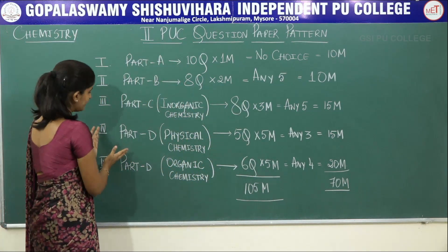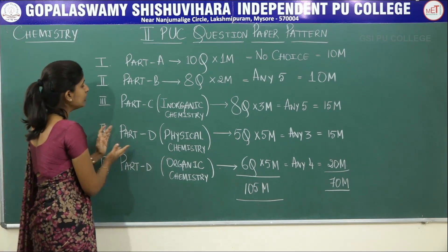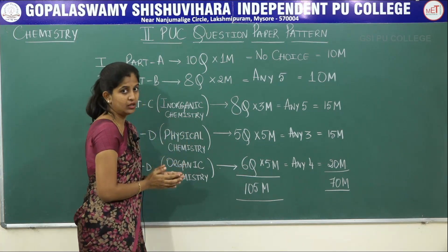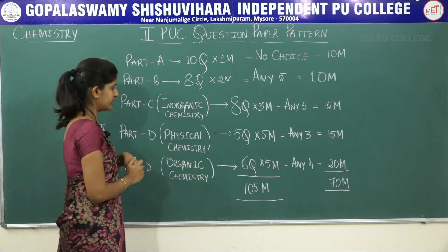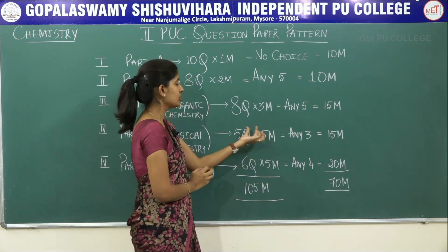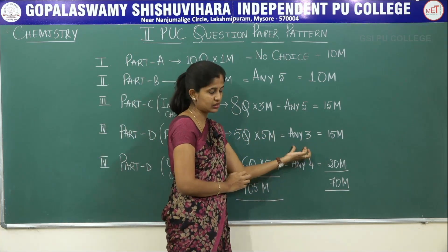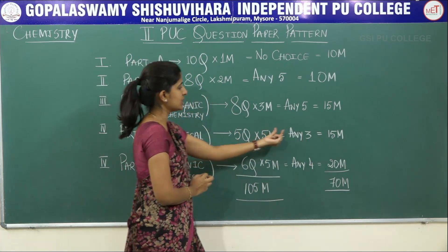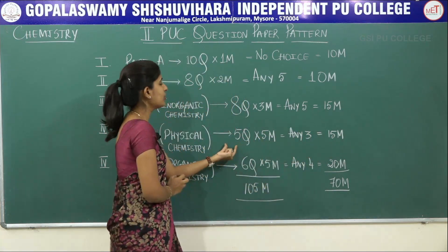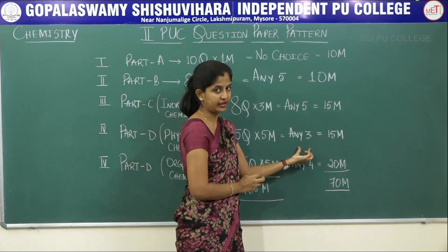In Part D there are two mains — main 4 and main 5. Roman numeral 4 is completely for your physical chemistry. There will be five questions of five marks each, among which you have to attempt only three questions. Three questions into five marks gives a total weightage of 15 marks for this main. So there will be two choices, and you attempt only three out of five questions.